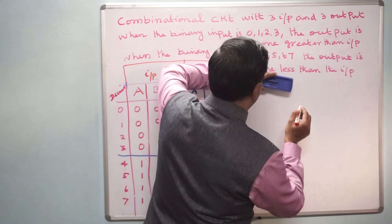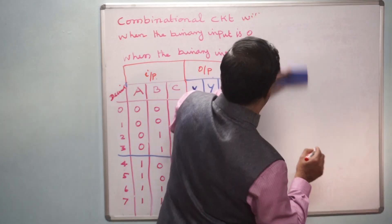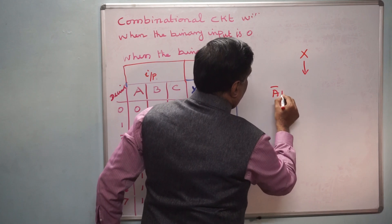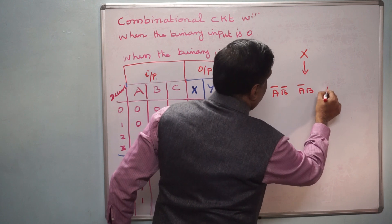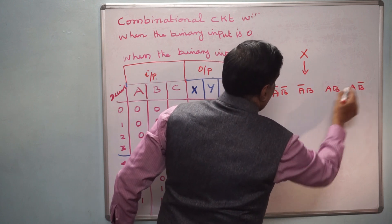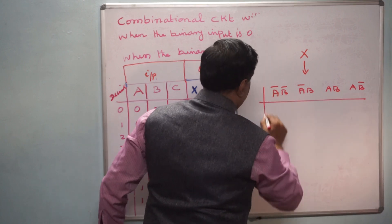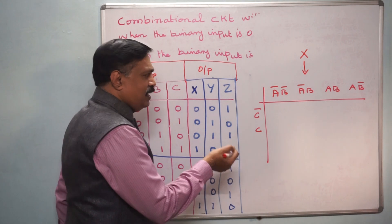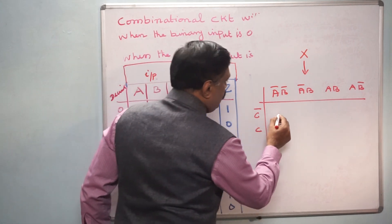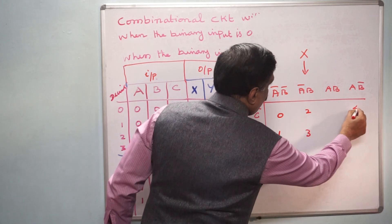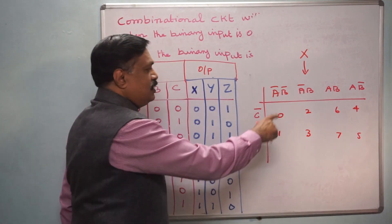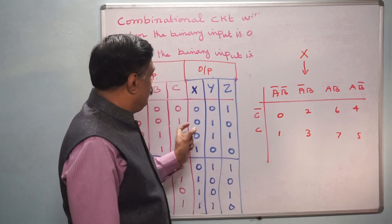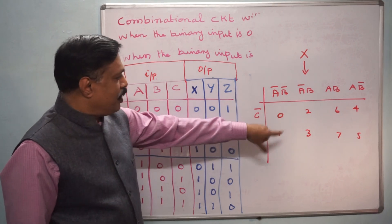Now for X, I am going to write the Karnaugh map. For 3 variables, the K-map has A-bar B-bar, A-bar B, AB, and AB-bar across the top, and C-bar, C down the side. Just to remind you, these are the cell positions: 0, 1, 2, 3, 4, 5, 6, 7 — these are the decimal number values of the cells.